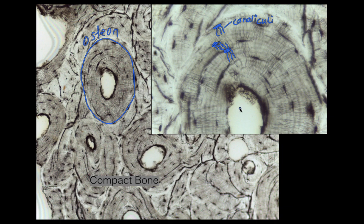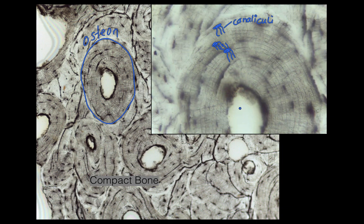If I change the focus on the microscope, we'll see the next structure of the osteon: the lamellae. You can see these almost look like tree rings. In between those layers — those are the lamellae, which just means sheet. So those are the sheets or rings of bone forming the osteon.